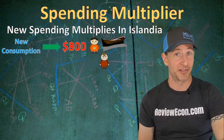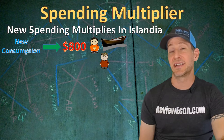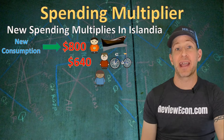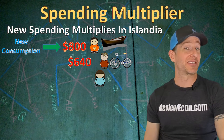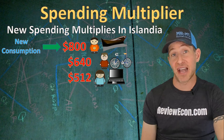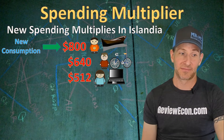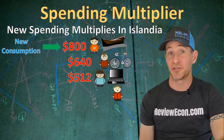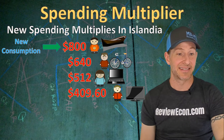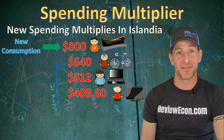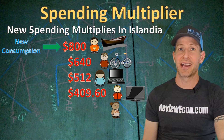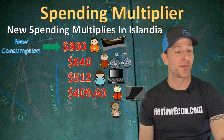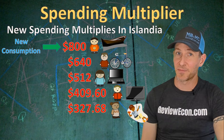Victor bought that canoe from Thomas, who makes canoes for a living. Thomas now has $800 and is going to spend 80% of it — $640 — on a new bicycle, purchased from Angela, who produces bicycles in Islandia. Angela now has $640 and spends 80% of it — $512 — on a brand new laptop, saving the rest. She bought the laptop at Gary's computer shop. Gary now has $512, spends 80% — $409.60 — and saves the rest. Gary bought a new television at Victoria's electronics shop. Victoria now has $409.60, saves 20%, and spends $327.68 on rock climbing equipment.